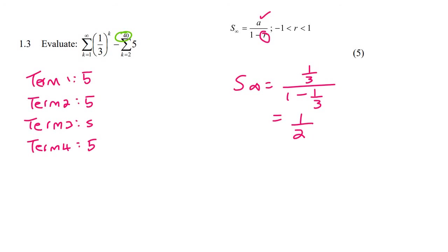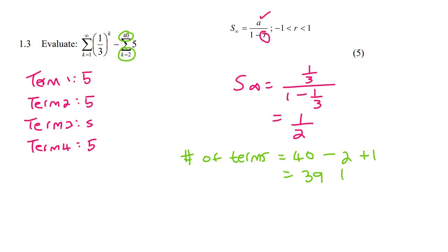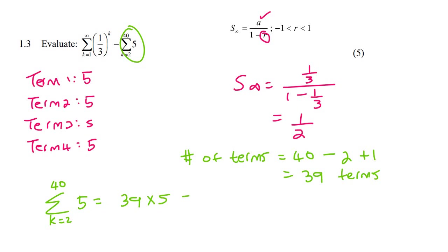Now some students would say there's going to be 40 of them — no. Remember, the number of terms is always the top number minus the bottom number plus 1, so there are actually going to be 39 terms in that sequence. So there are 39 fives. If you have 5 added together 39 times, you can work it out as 39 times 5, and that's going to be 195.